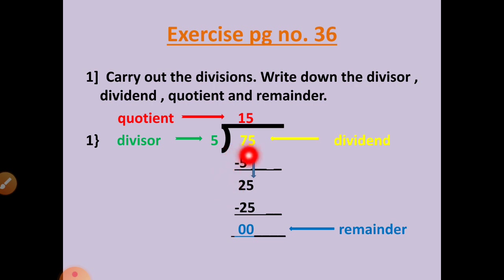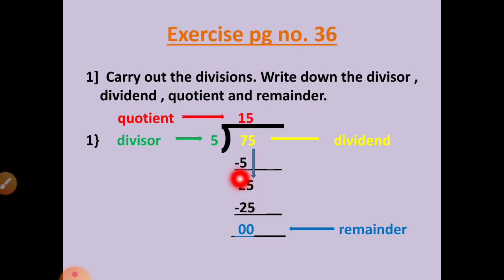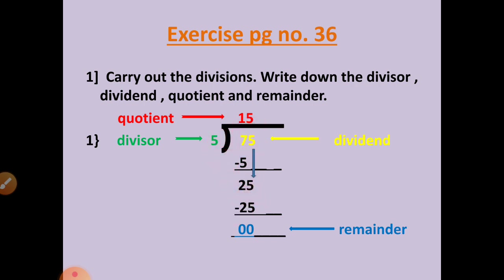Now the next number is 5. Write this 5 number down. Now this number is 25. In the table of 5, 25 will come. Yes — 5 fives are 25.